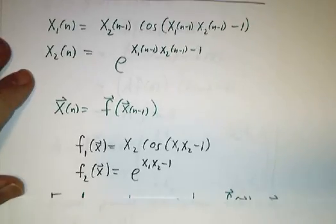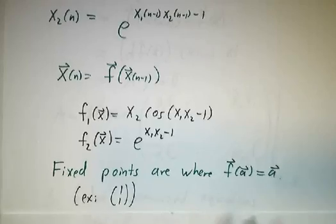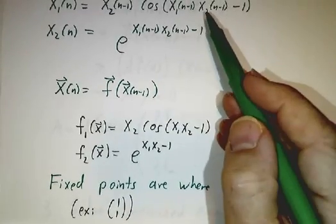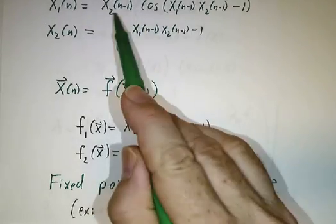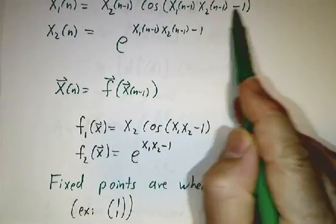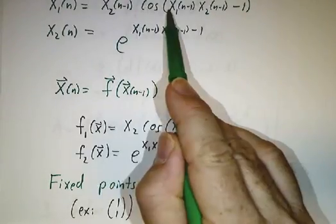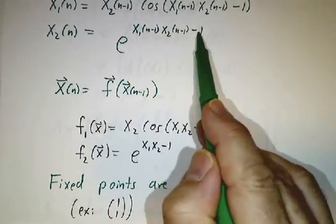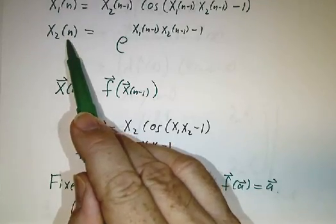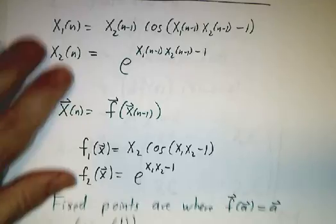Now, (1,1) is a fixed point. A fixed point is a place where f(a) = a. If yesterday x1 and x2 were 1, then today x1 will be 1 times cosine of (1·1 − 1), that's cosine of 0, so 1·cos(0) = 1, and e^(1·1 − 1) = 1. So if we start off at (1,1), we stay at (1,1).